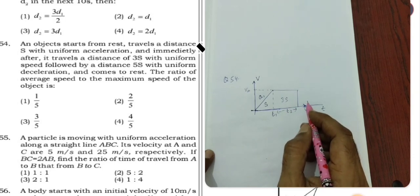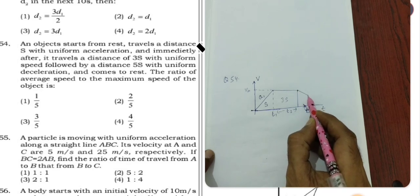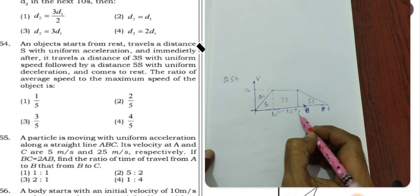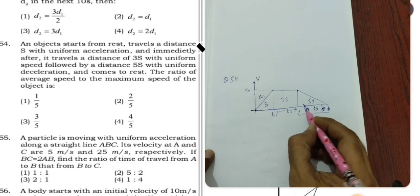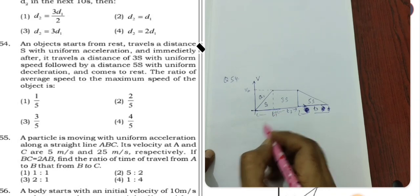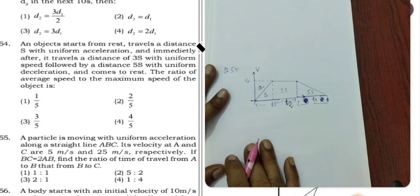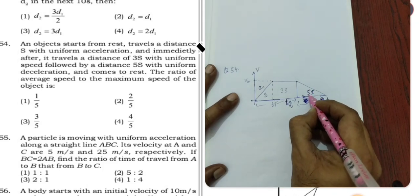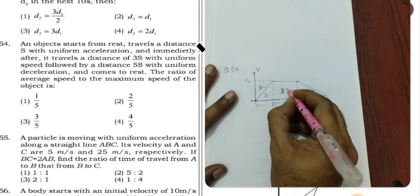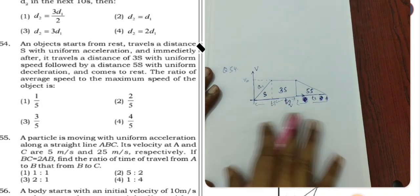Then it says 5S with uniform deceleration and comes to rest. From this maximum velocity achieved, it decelerates and travels 5S distance. So this area will be larger. The time in this segment we assume as T3. Here to here is T3, here to here is T2, here to here is T1. And here 5S is the distance, and here 3S.